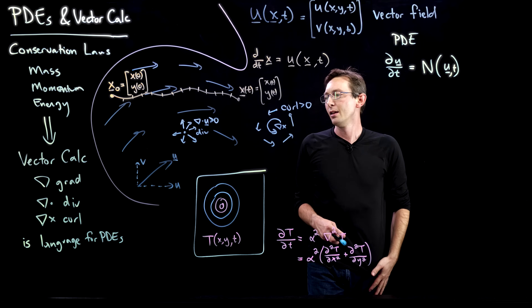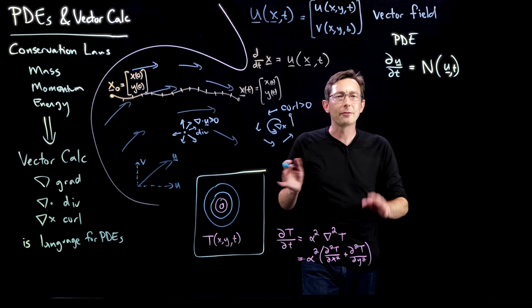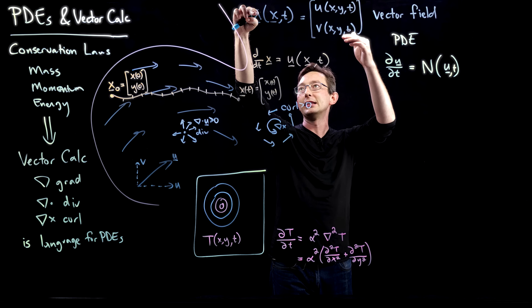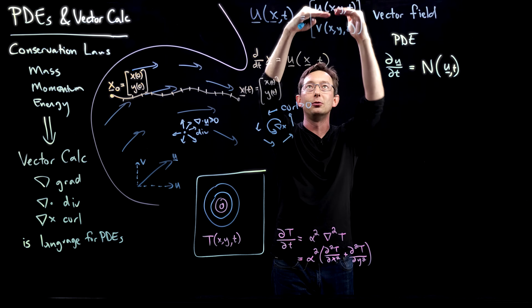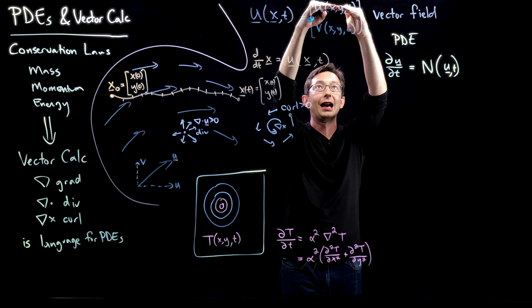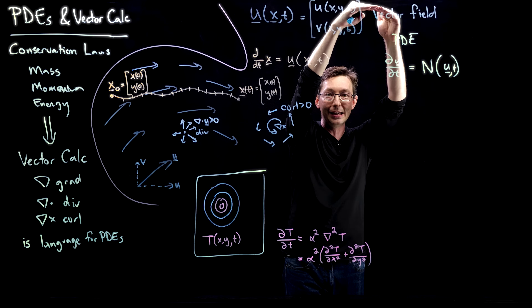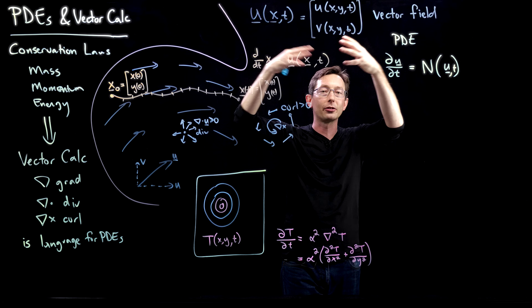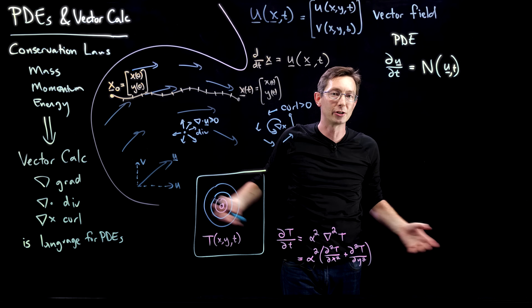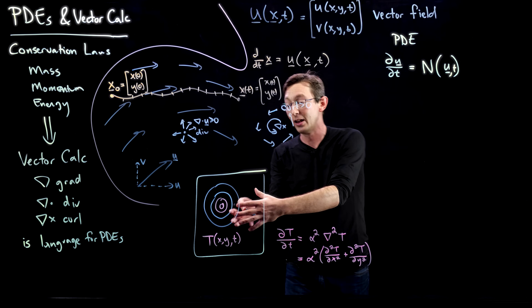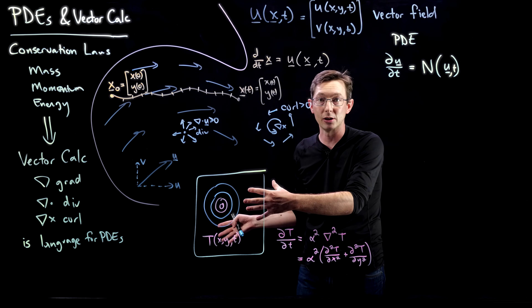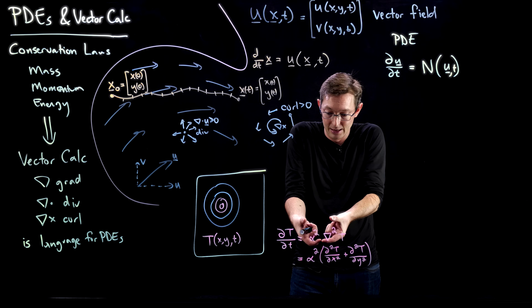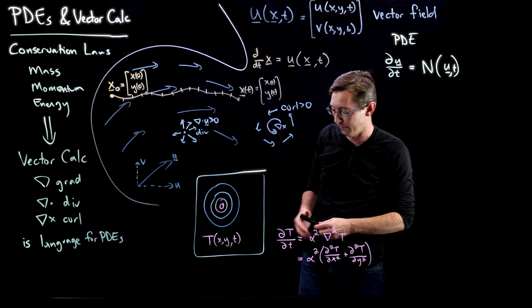In three dimensions, bold u has u, v, and w components for the x, y, and z directions of the velocity field. These ideas generalize to any number of dimensions — you can write the heat equation in five dimensions or a million dimensions; it's the same equation. There's nothing wrong with that.